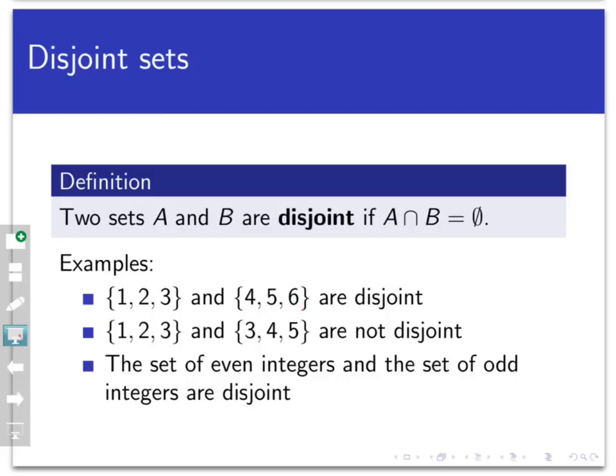The sets {1, 2, 3} and {3, 4, 5} are not disjoint. They don't have much overlap, but they do have some overlap. There is at least one element that belongs to their intersection.